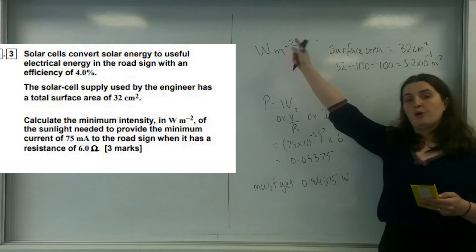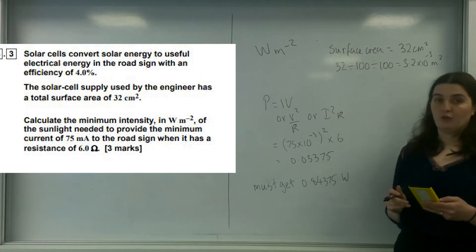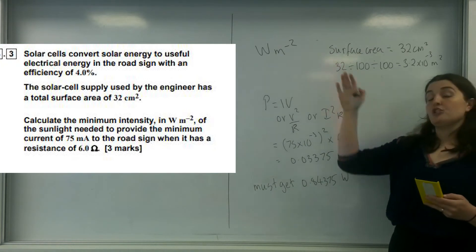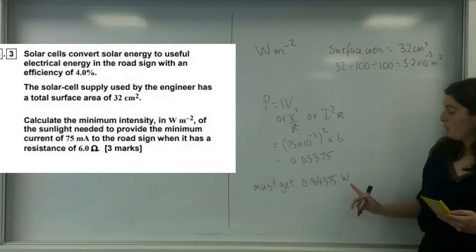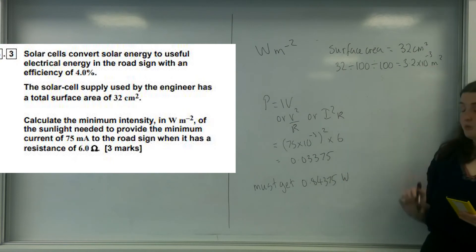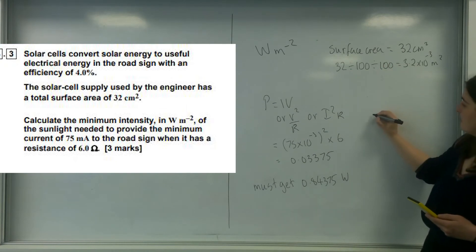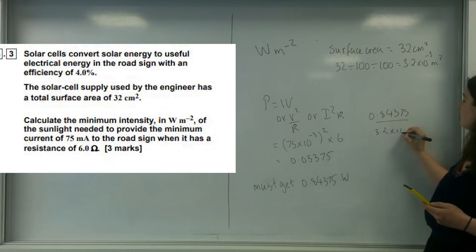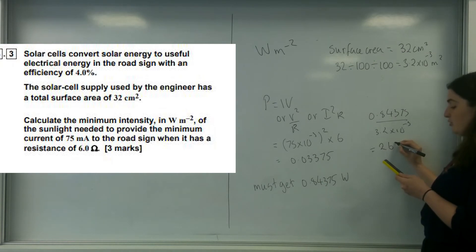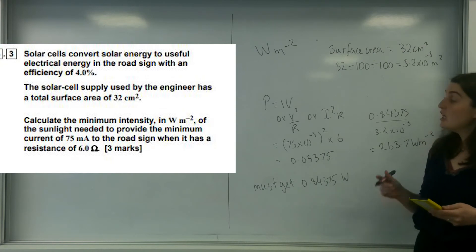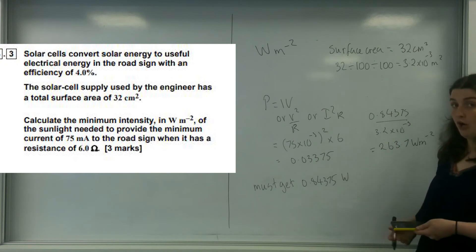I wanted watts per meter squared. This unit should give you a massive hint of how to do this. I'm going to take this number and divide it by this number. I've got 0.84375 over 3.2 times 10 to the minus 3, and I'm going to need at least 263.7 watts per meter squared of intensity of light to even achieve enough for this to work.